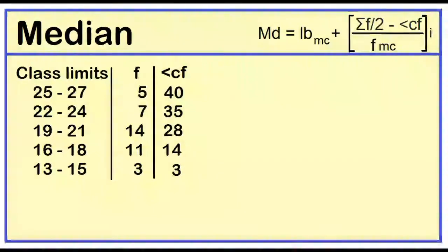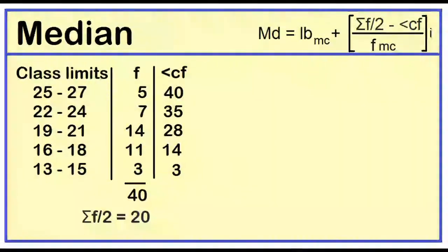The total frequency is 40, and one-half of the total frequency is 20. The smallest cumulative frequency greater than or equal to 20 is 28, meaning our median class is 19 to 21.